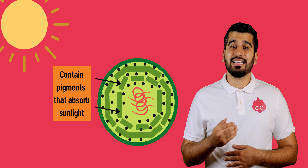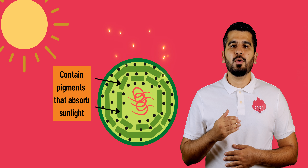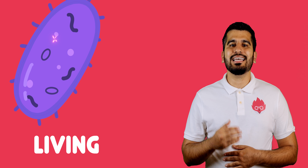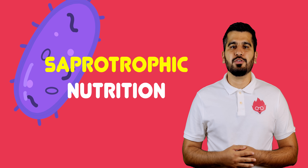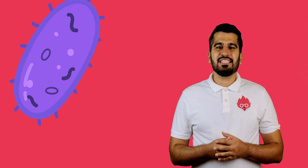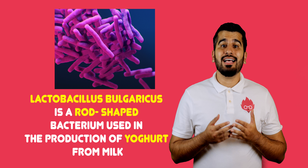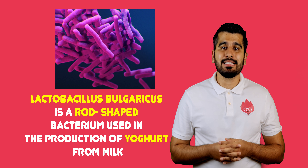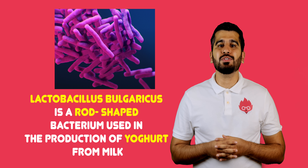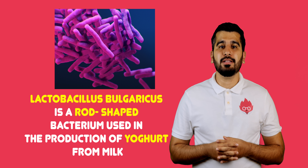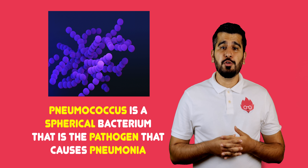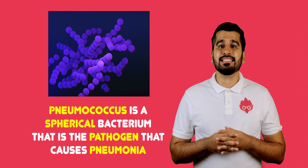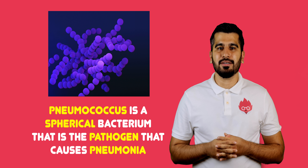Some bacteria can carry out photosynthesis, but most feed off other living or dead organisms by saprotrophic nutrition. Examples of bacteria include Lactobacillus bulgaricus, a rod-shaped bacterium used in the production of yogurt from milk, and Pneumococcus, a spherical bacterium that is the pathogen that causes pneumonia.